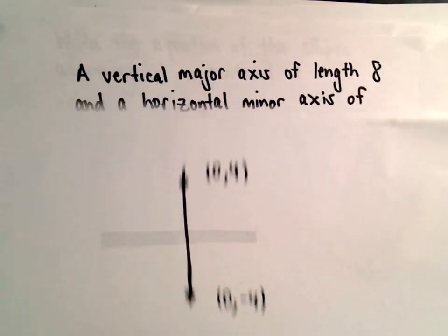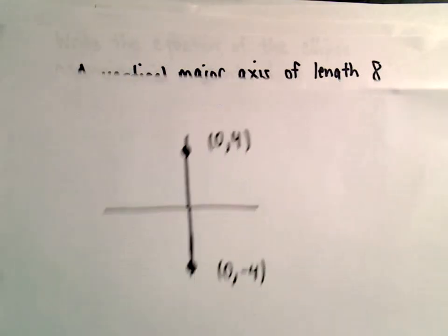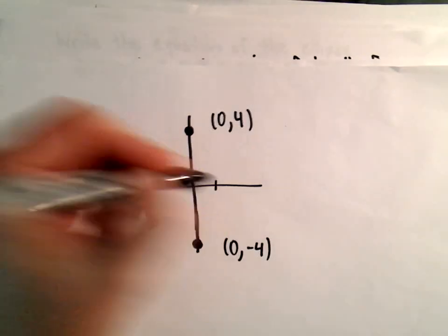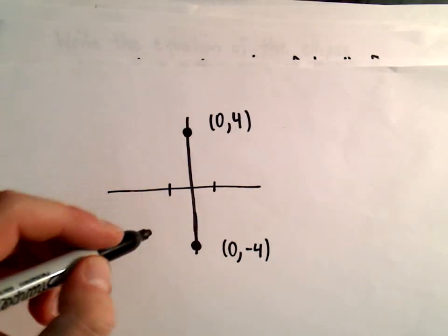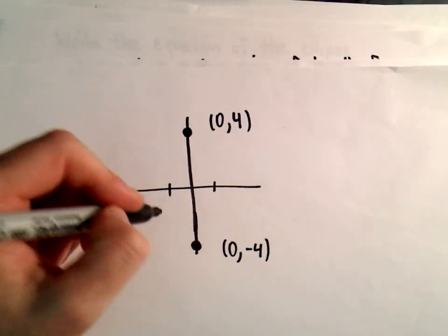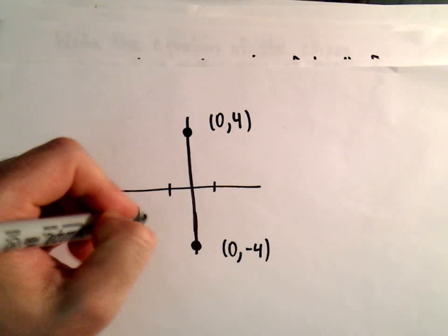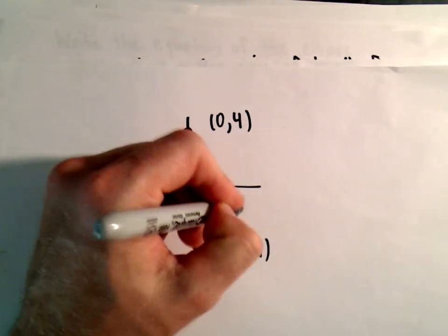The minor axis has a length of 2, which means we go one unit to the right and one unit to the left. So the co-vertices will be at (-1, 0) and (1, 0).